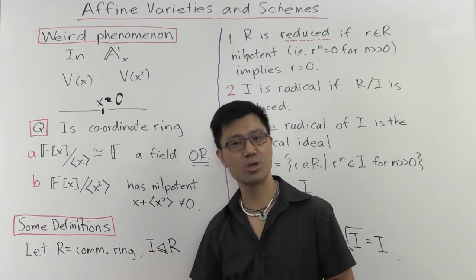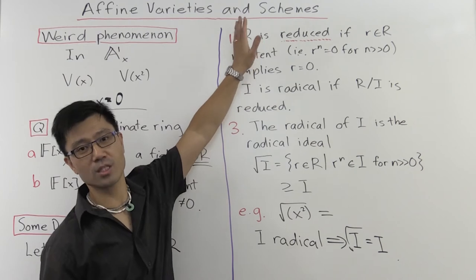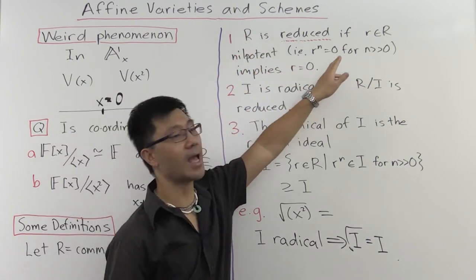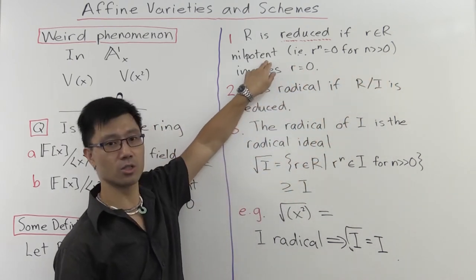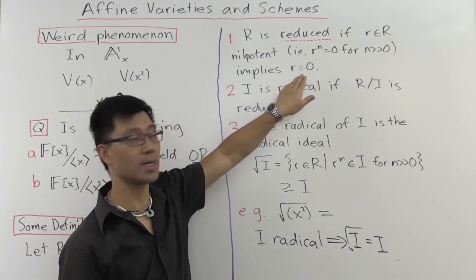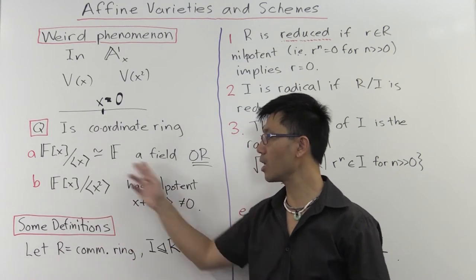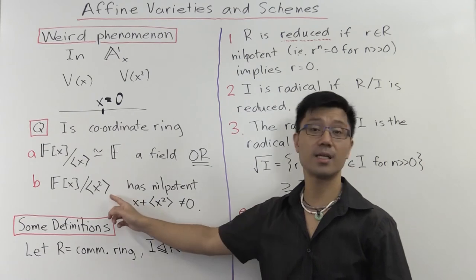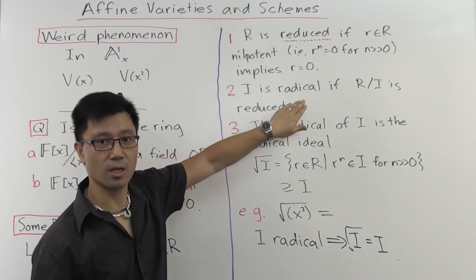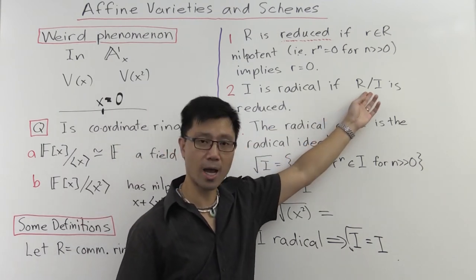Let's look fairly generally at some commutative ring R and consider an ideal inside R. The first thing I want to define is the notion of reduced. A ring is reduced if whenever you have any element which is nilpotent — meaning some high enough power of that element is equal to 0 — then that element has to be 0 itself. An example of something which is not reduced is the ring f[x]/(x²): it has a nilpotent element whose square is 0, but which is not 0 itself. The next definition: we say an ideal i is radical if the quotient R mod i is reduced.